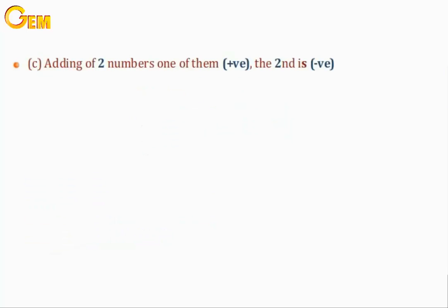C. Adding two numbers where one is positive and the second is negative. By using the number line, find 6 plus negative 4. From the point 0, move in the positive side 6 steps, then return back in the negative side 4 steps. The answer will be 2.